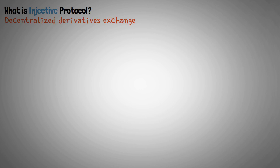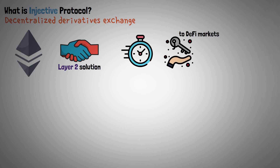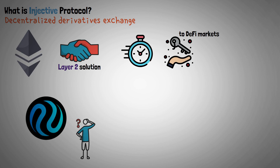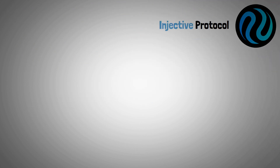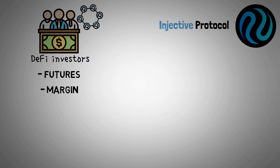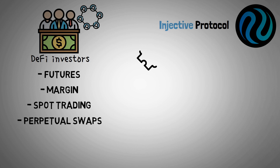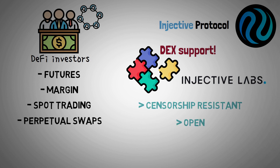Injective Protocol is a decentralized derivatives exchange based on Ethereum and supported by a Layer 2 solution that gives investors quick and secure access to DeFi markets. It's not just a DEX with yield farming and token swapping options — instead, it's a DEX that focuses on the derivatives market. The goal is to provide DeFi investors with futures, margin, spot trading, and perpetual swaps. Every component is constructed to be censorship-resistant, open, and completely trustworthy.